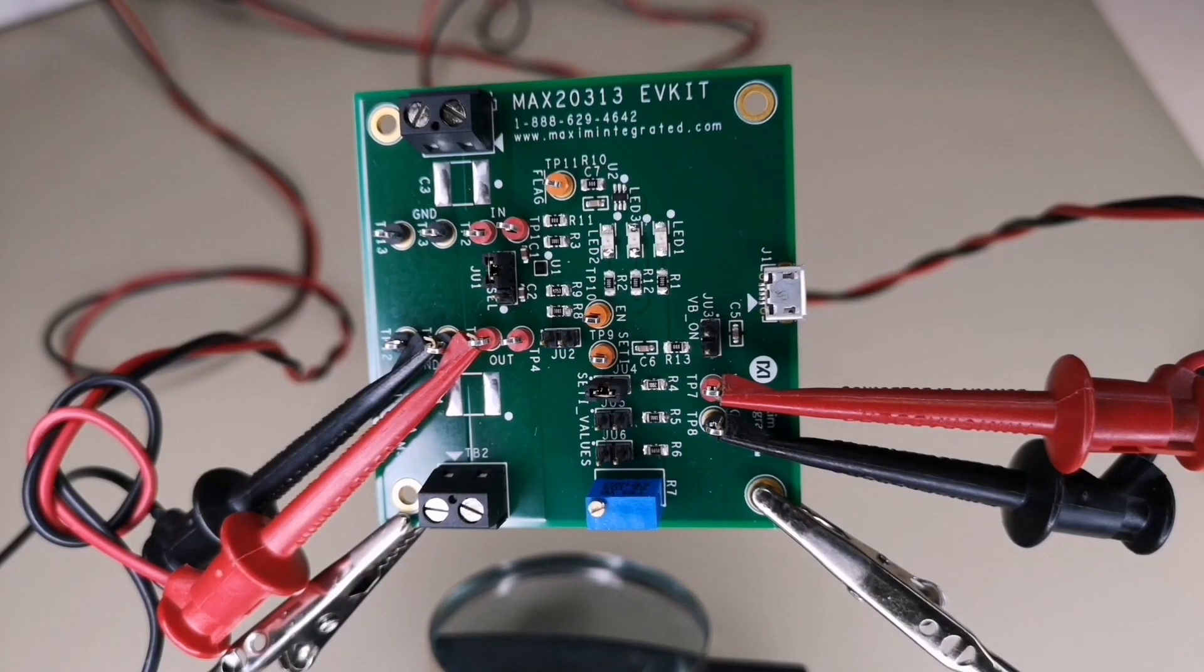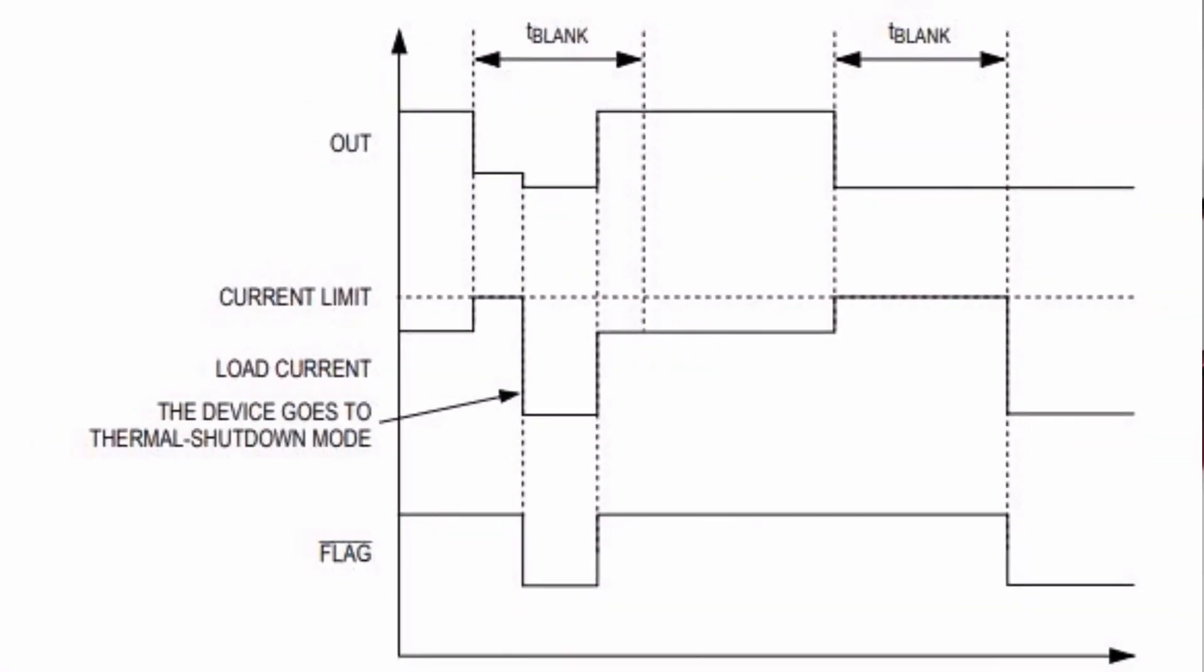A resistor from set I to ground sets our current limit threshold for the switch. If the output current is limited at the current threshold for a time equal to or longer than T-blank the MAX2313 enters continuous current limit mode.